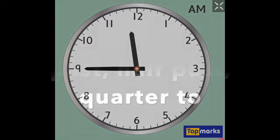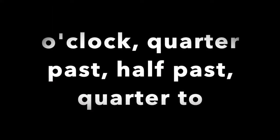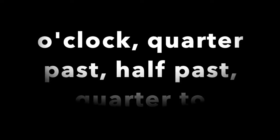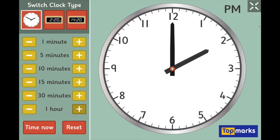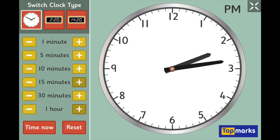Now let's practise all the times we know together. What time is it here? 2 o'clock. Let's make it quarter past 2 — visualise where you think those hands will be. Quarter past 2: big hand at 3, and little hand a little bit past the hour of 2.